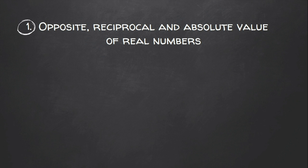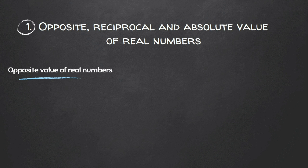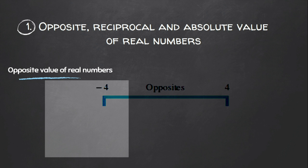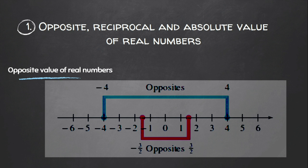Let's start with how to determine the opposite value, reciprocal value, and absolute value of real numbers. Firstly, we learn to simplify the opposite value of real numbers. Two numbers that have the same distance from zero on the real line but are on opposite sides of each other are called opposites. For example, four and minus four are opposites of each other, as both have the same distance from zero but lie in opposite directions.